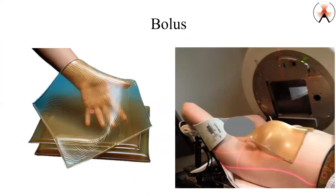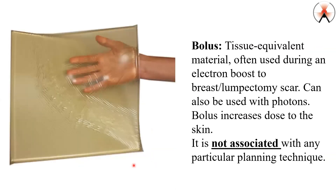Bolus — I have had questions regarding bolus. Bolus is tissue-equivalent material that is placed on top of the breast or the reconstructed breast. What it does is bring the dose closer to the surface of the skin. This is very likely a reconstructed breast, and the radiation oncologist wants to boost the surface of the skin so they put bolus. But it has nothing to do with coding — it's not associated with any planning technique.